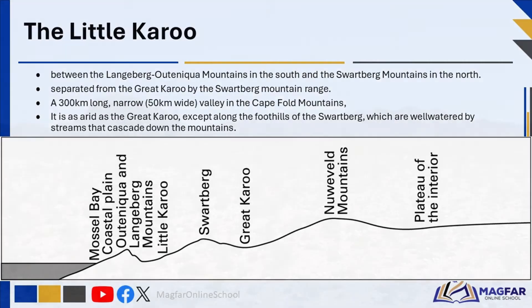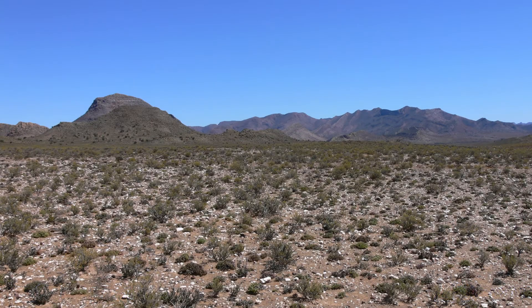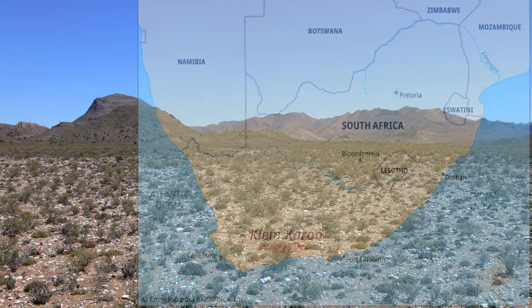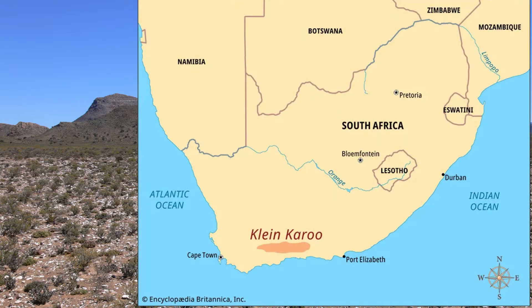The Little Karoo has a semi-desert climate. Summers are usually hot and dry. In winter the days are often warm, but the nights can be quite cold. It is as arid as the Great Karoo, except along the foothills of the Swartberg, which are well watered by streams that cascade down the mountains.